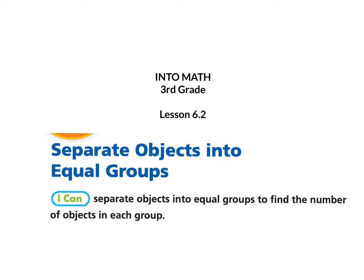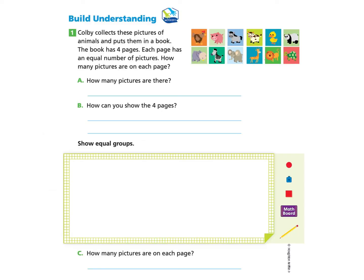Into math third grade lesson 6.2. Separate objects into equal groups. I can separate objects into equal groups to find the number of objects in each group. Please gather your workbook and a pencil and turn to page 144. You can pause if needed.